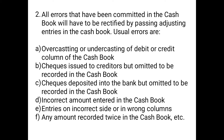A fourth error is an incorrect amount entered in the cash book — for example, entering 50 instead of 500 rupees. Another error is entries on the incorrect side or in wrong columns — showing a debit item in the credit column or vice versa. Finally, any amount recorded twice in the cash book is also a usual type of error.